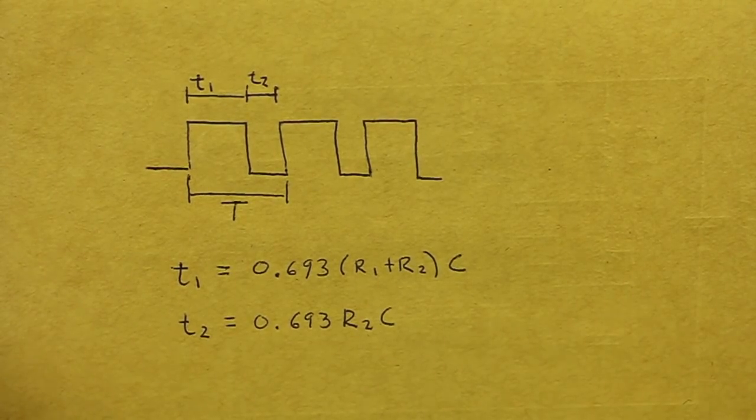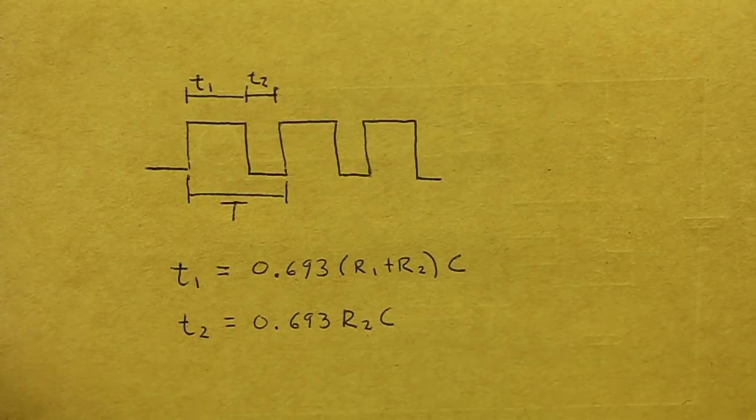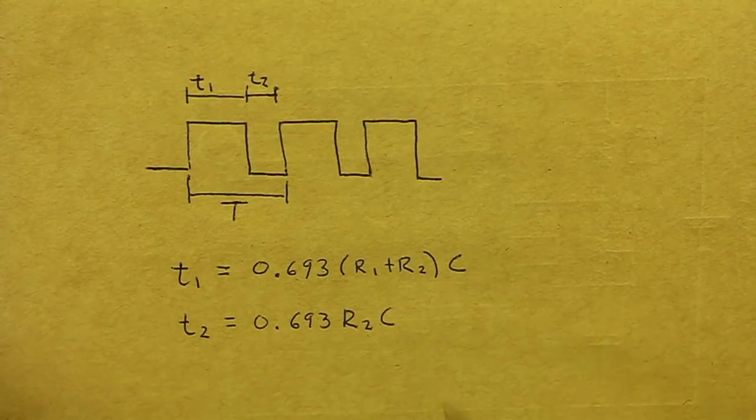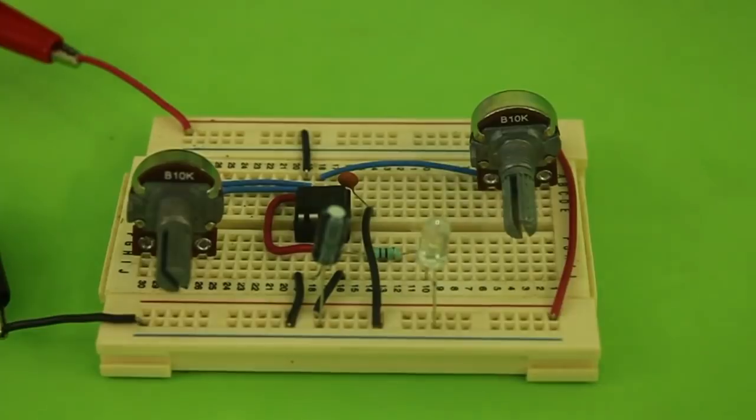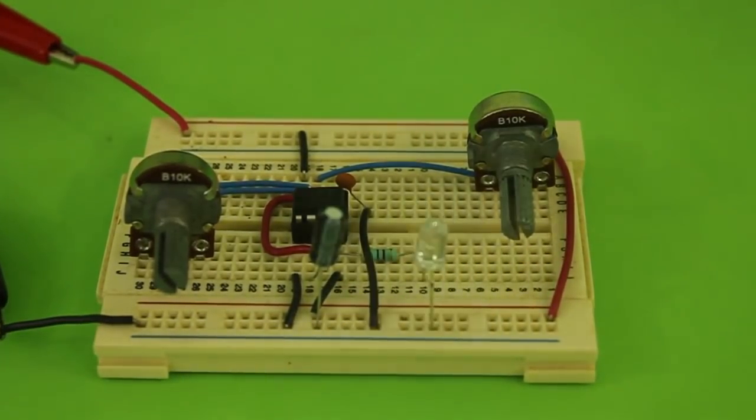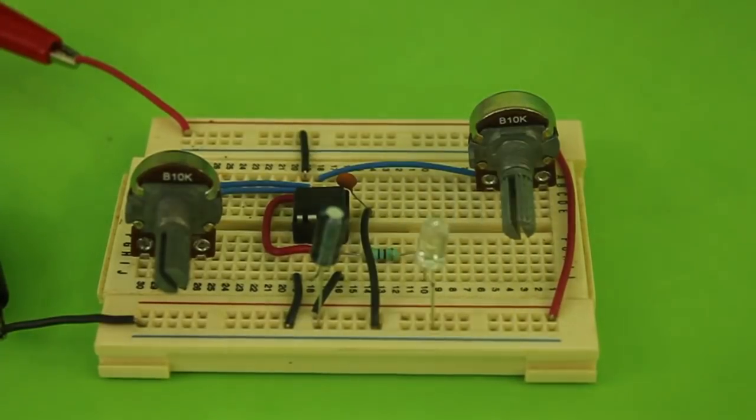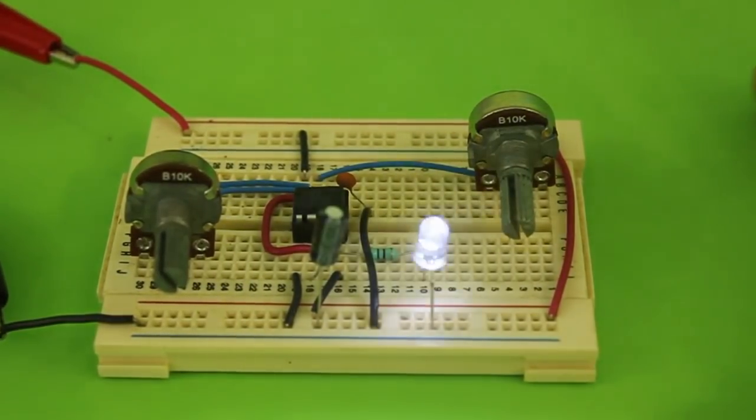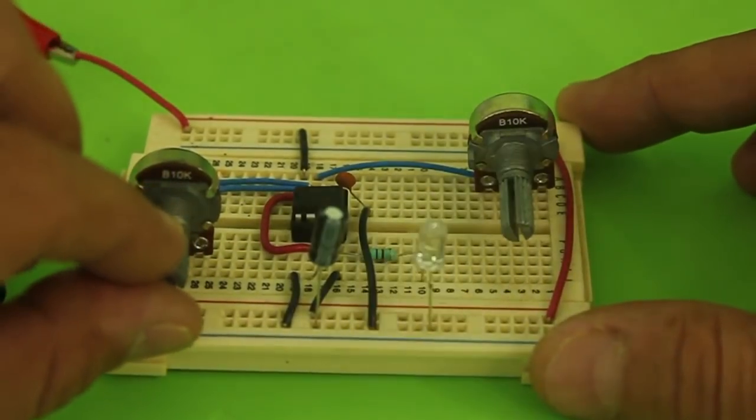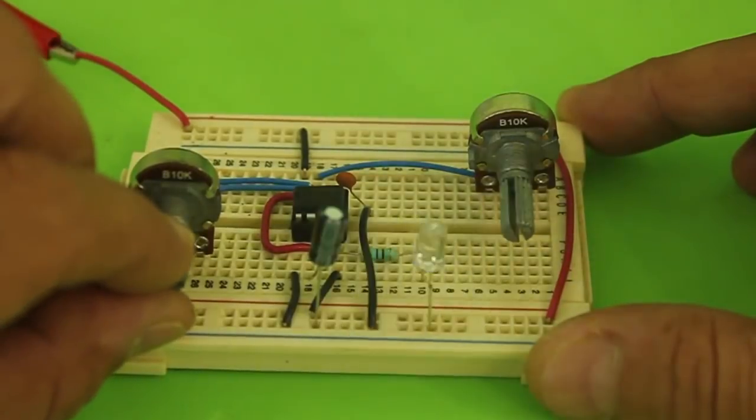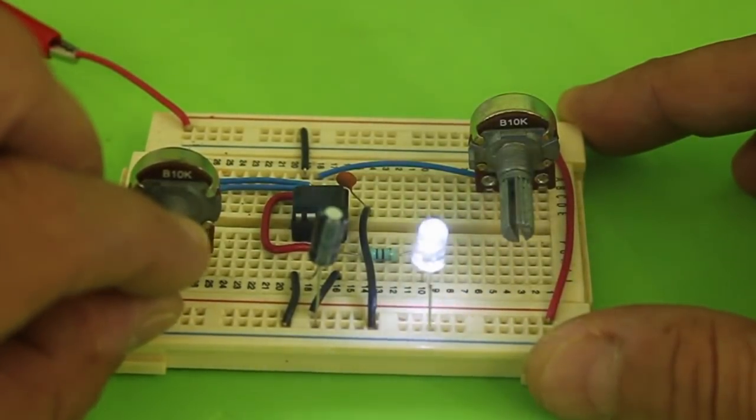Let's now see directly in the circuit and the oscilloscope how the train of pulses changes when we change these parameters. In the circuit I have two potentiometers to change the values of resistance 1 and 2, and you can see the LED blinking. Let's move the first resistor, and we can see that the rate of flashing is higher.